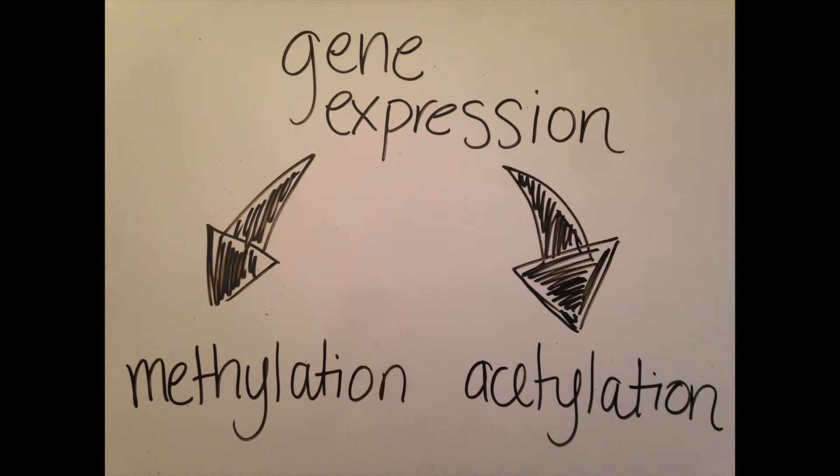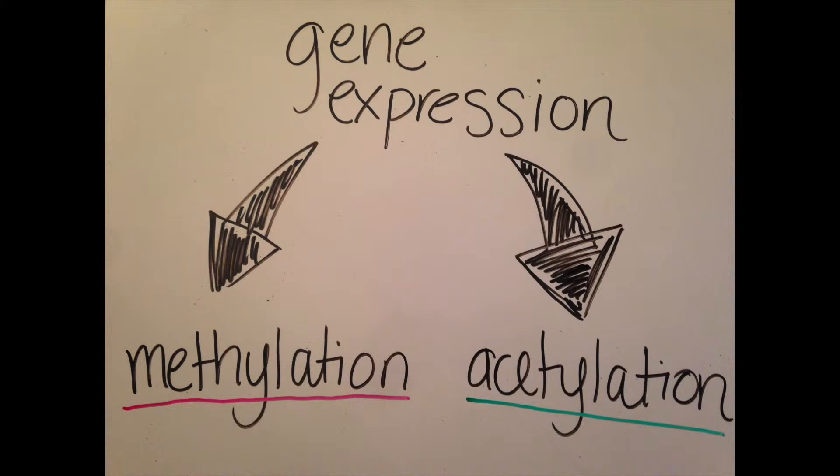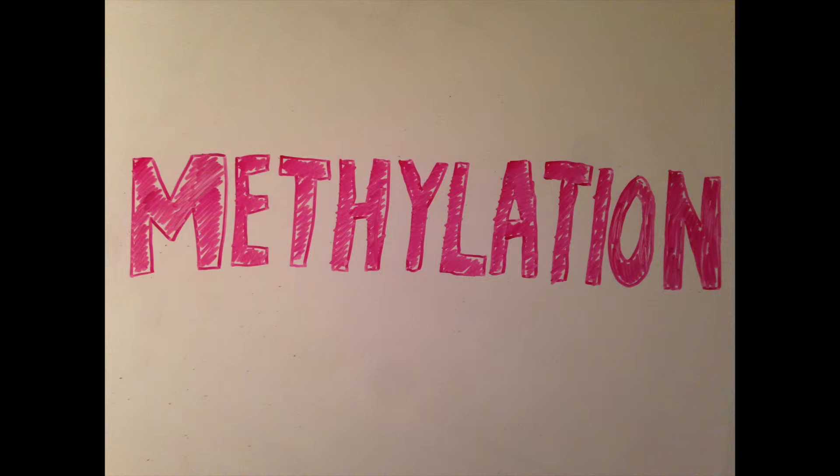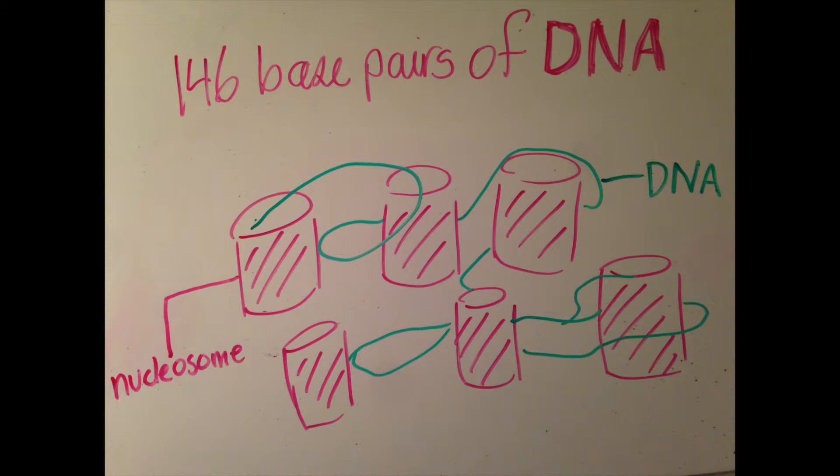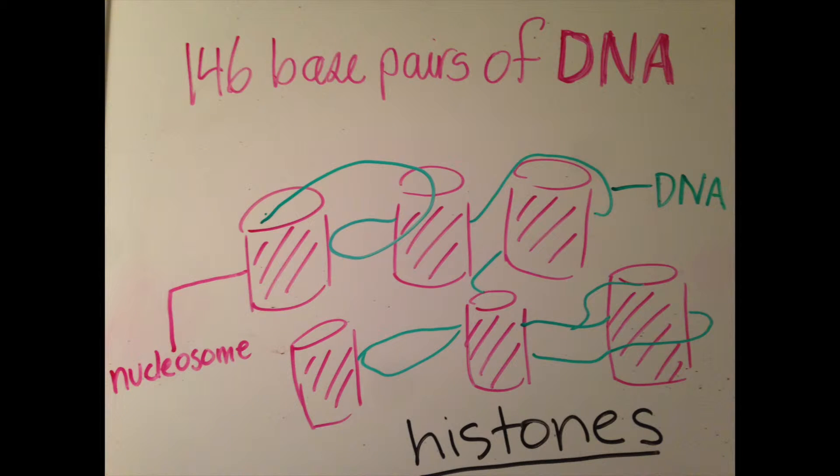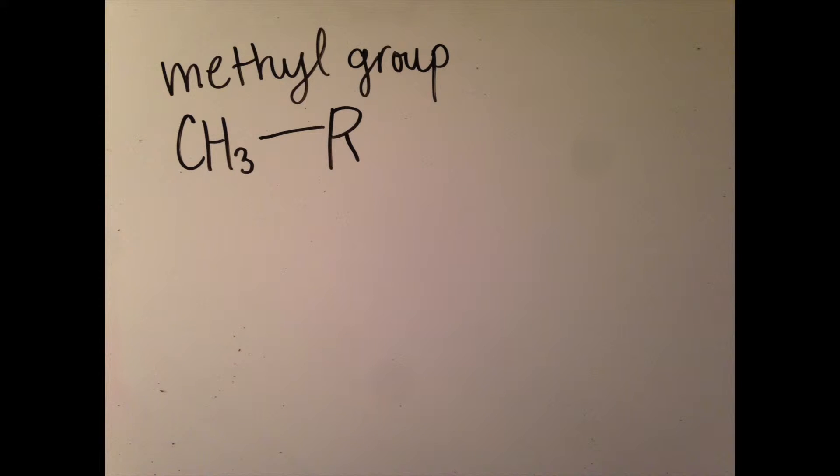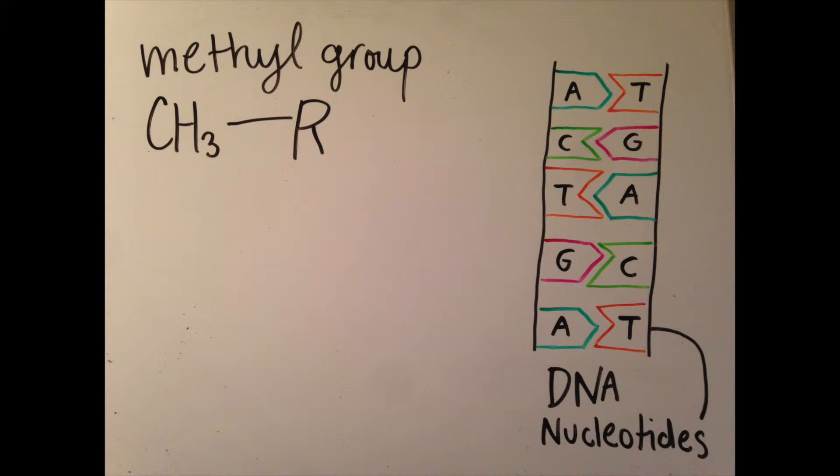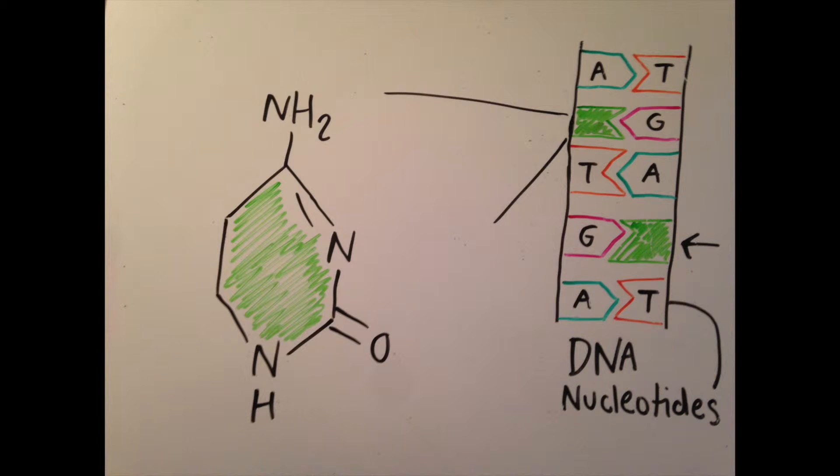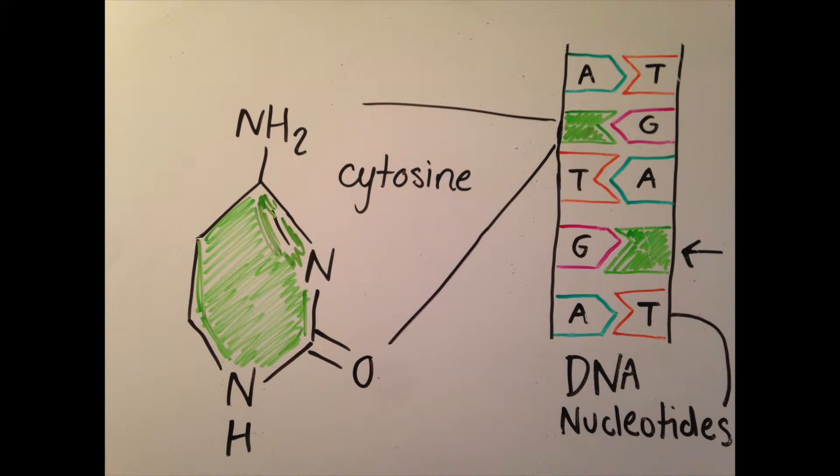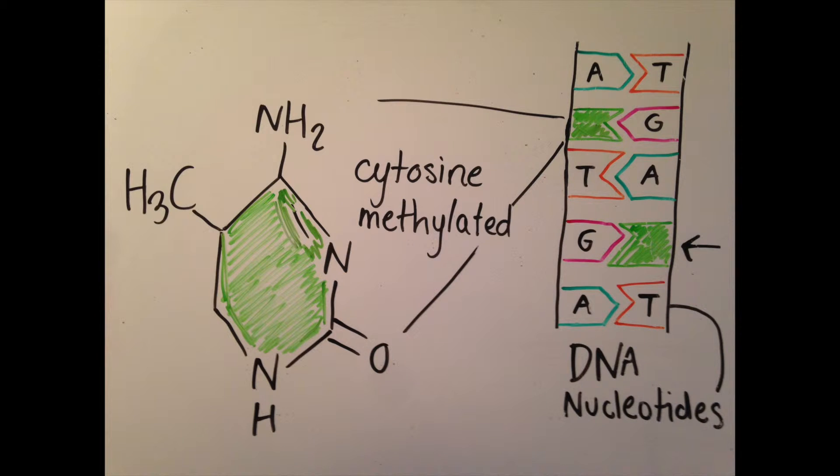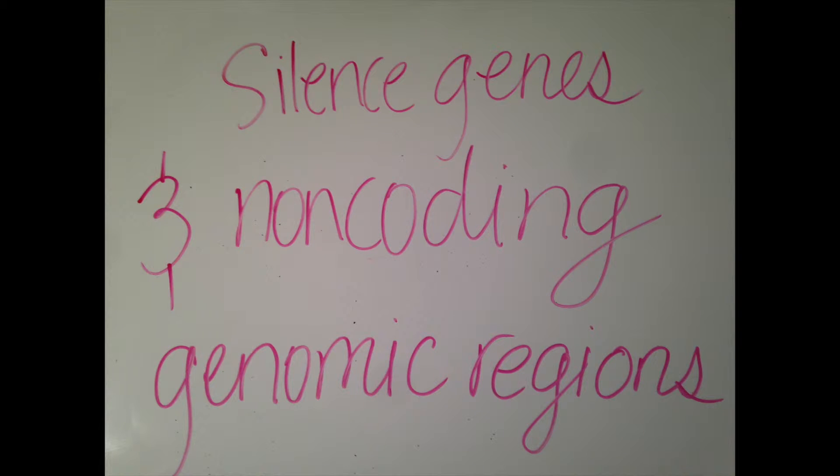Epigenetic mechanisms such as methylation and acetylation play a major role in controlling gene expression. Methylation is a process in which repeating nucleosomes consisting of 146 base pairs of DNA each wrap around each other creating histones, or structural units of DNA. Methyl groups are then attached to the DNA's nucleotide, specifically cytosine, and therefore is able to modify chromatin structure and regulation and repress gene transcription. Methylation can also silence genes and non-coding genomic regions.